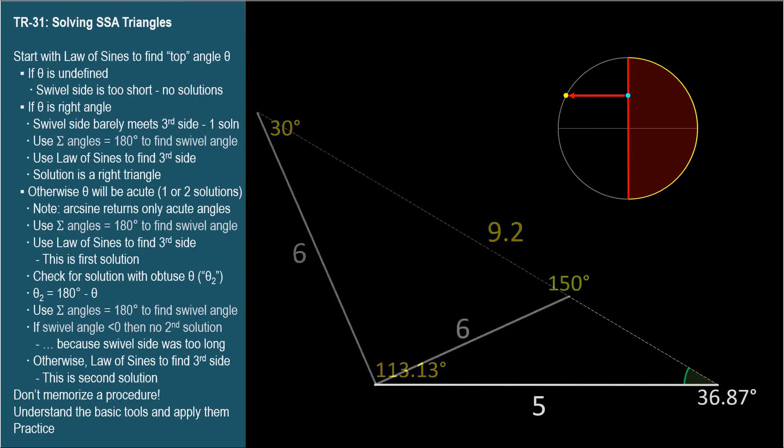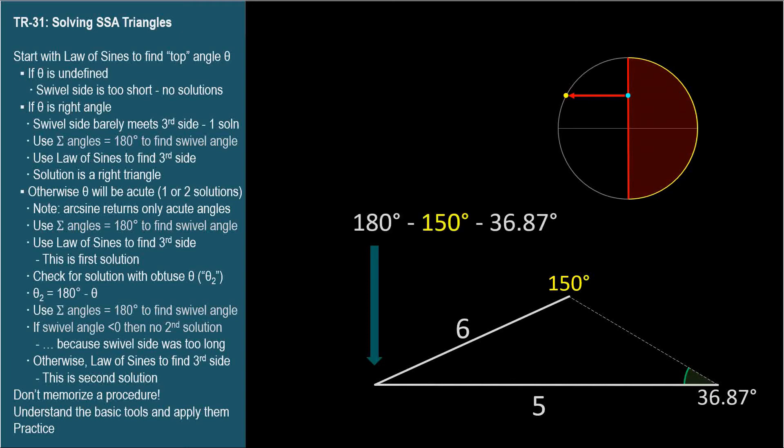So let's draw a new triangle, not to scale, and let theta equal 150 degrees. Again, we find the third angle, the swivel angle, by subtracting from 180 degrees. 180 degrees, minus 36.87, minus 150 degrees, equals a negative angle.